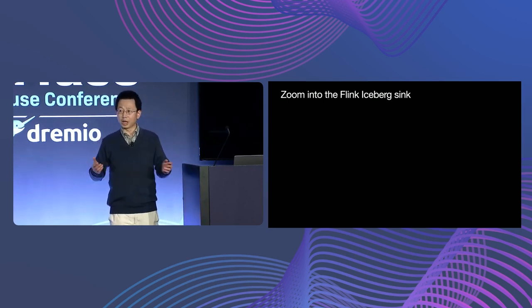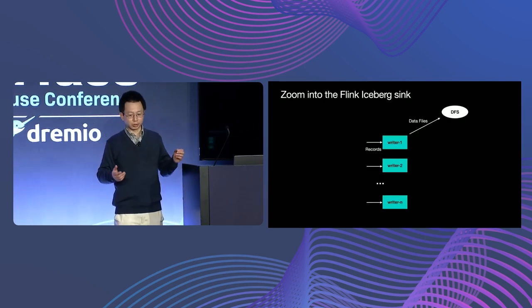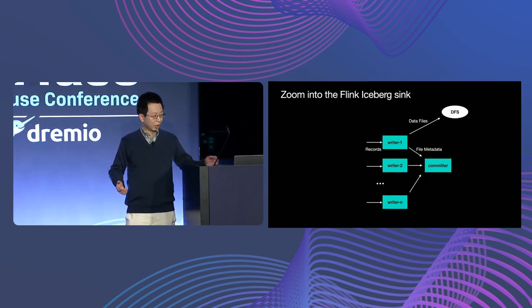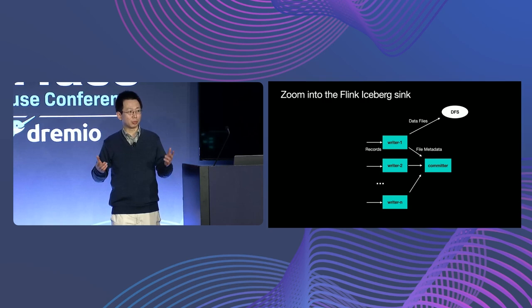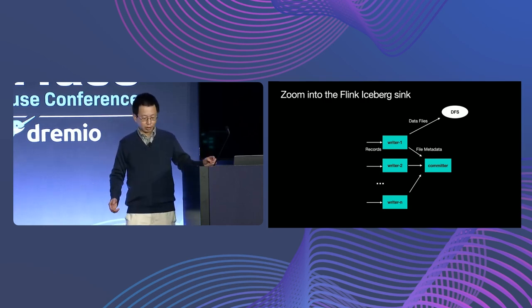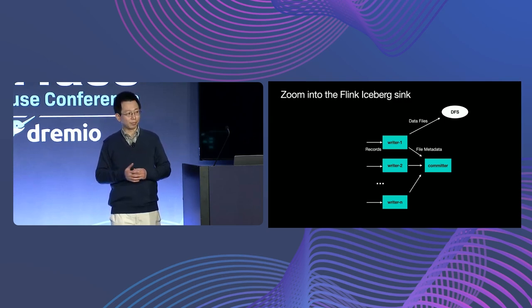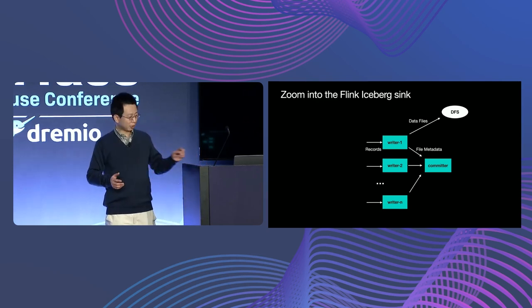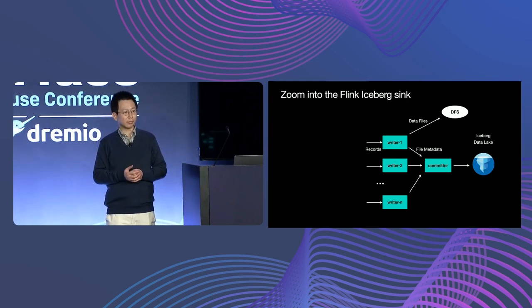Let's zoom in a little bit to see how Flink-Iceberg sync works internally. First, there are parallel writers. They process the records and then write them into a data file like Parquet. When Flink checkpoint comes, the writers will flush the data file and upload them to the distributed file system. Then the writer sends the metadata about the files, like location of the file, to the commit operator. The commit operator always runs with parallelism 1. When the Flink checkpoint finishes successfully, the commit operator then commits a list of collected data files to Iceberg. This is in a nutshell how Flink-Iceberg sync works, and it works well for many use cases for streaming ingestion to Iceberg.